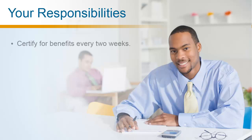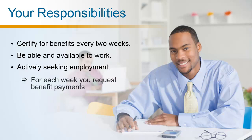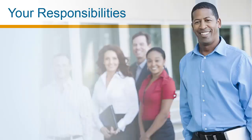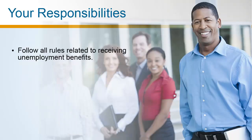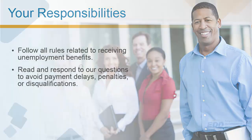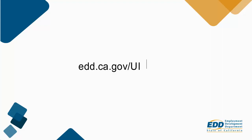Remember, it's your responsibility to certify for benefits every two weeks, be able and available for work, and actively seek employment for each week you request benefit payments. It is also your responsibility to follow all rules related to receiving unemployment benefits. Be sure to read and respond to our questions to avoid payment delays, penalties, or disqualifications. We hope this video is helpful and invite you to learn more about UI Online at edd.ca.gov/UI_online.